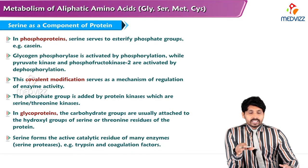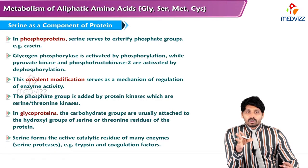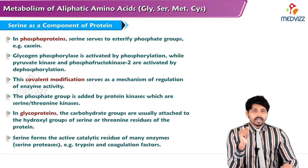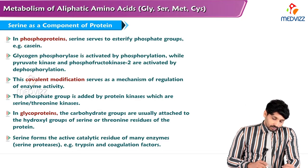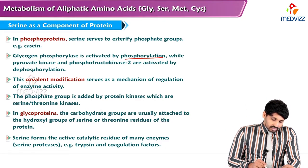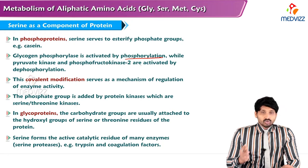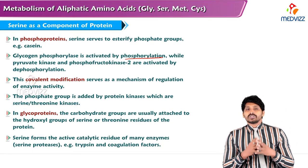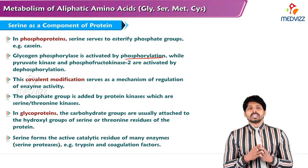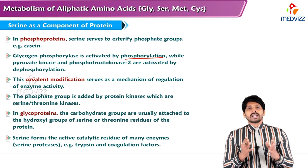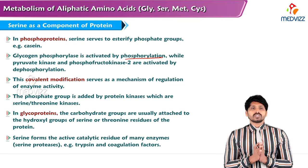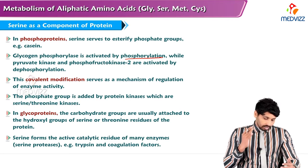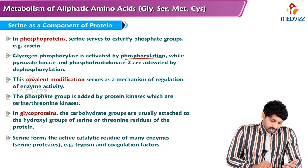Serine serves as a component of phosphoproteins by anchoring phosphate groups — for example, casein. Serine is an important amino acid in casein. Glycogen phosphorylase is activated by phosphorylation, while pyruvate kinase and phosphoprotein phosphatase 2 are activated by dephosphorylation. All these phosphorylation-based covalent modifications involve serine and serve as a mechanism of regulation of enzyme activity.